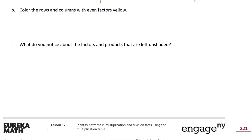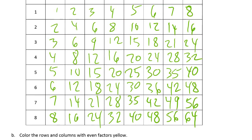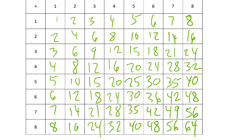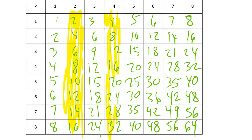Next instruction: color the rows and columns with even factors yellow. So we'll go ahead and color with yellow — rows and columns with even factors. Here's a column: six is an even number, eight is an even number. And now the rows — two is even as well.